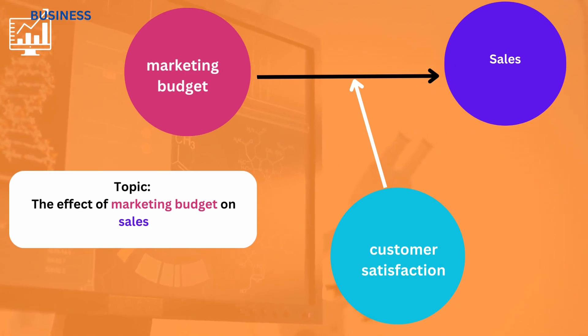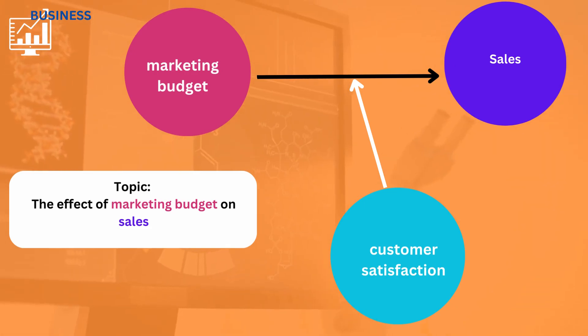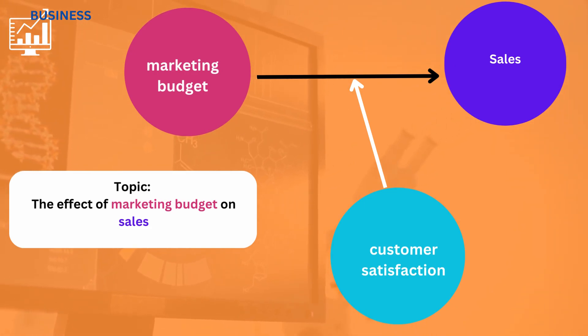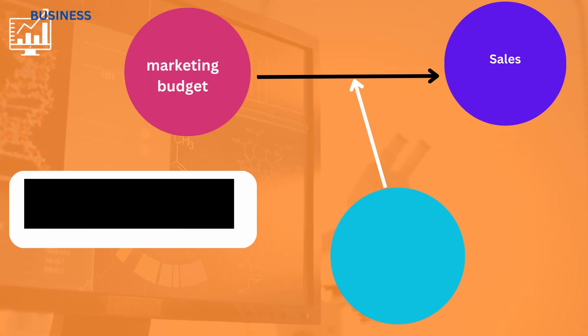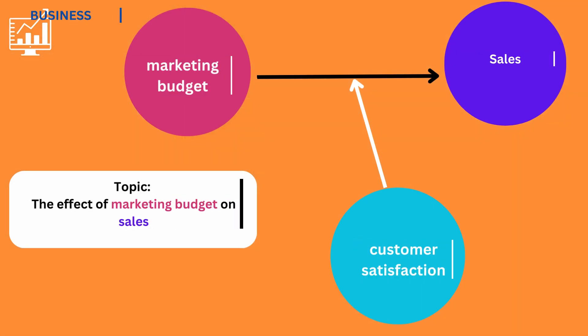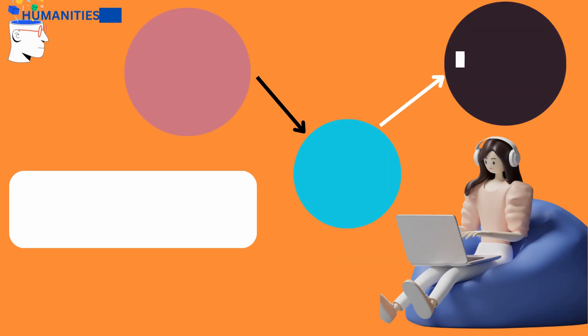In a business study, you may investigate how marketing budget influences sales while controlling for customer satisfaction. The independent variable is marketing budget, the dependent variable is sales, and the moderating variable is customer satisfaction.